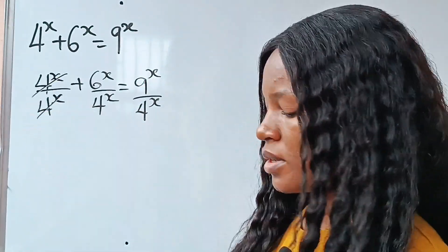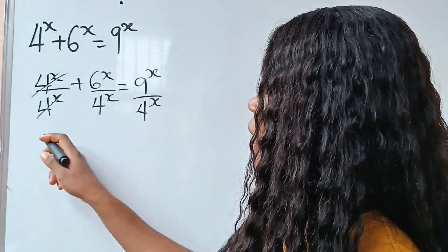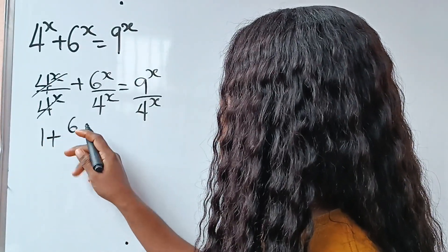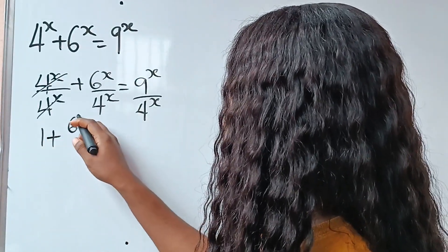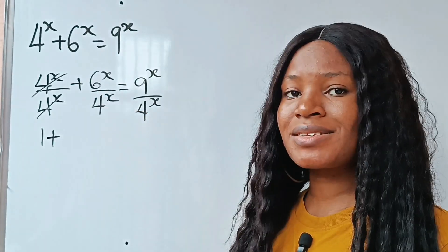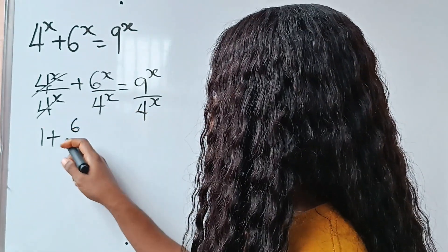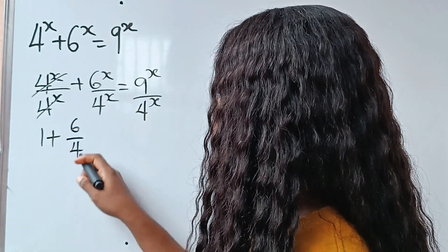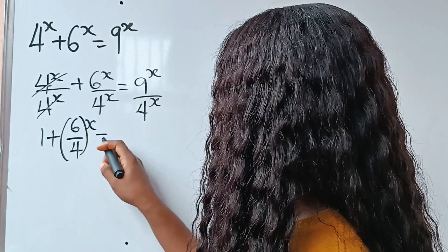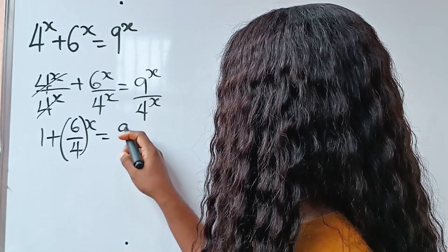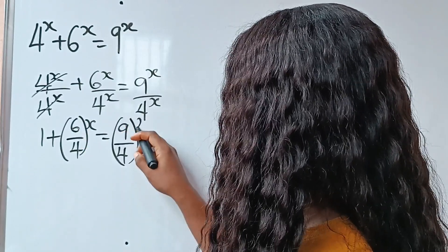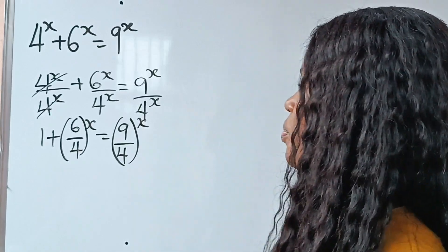This will divide this. We have 1 plus 6 to the power of x over 4 to the power of x, which can be written as 6 over 4 raised to the power of x, is equal to 9 over 4 raised to the power of x.